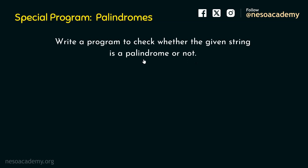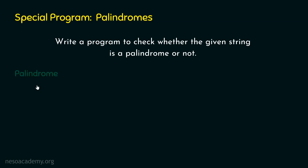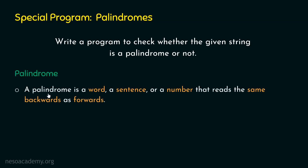First, we need to understand the meaning of palindrome in order to write the program. A palindrome is a word, a sentence, or a number that reads the same backwards as forwards. So a palindrome can be a word, a sentence, or a number that reads the same backwards as forwards.